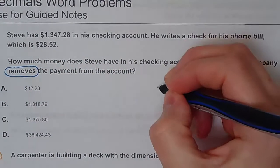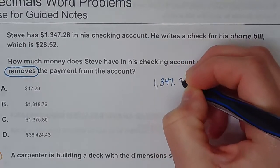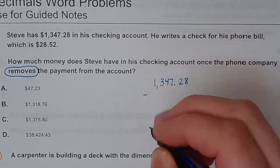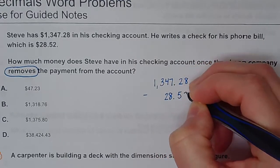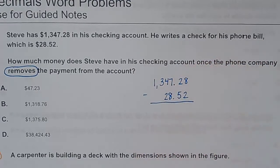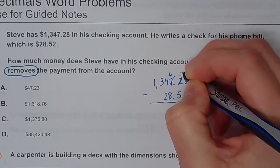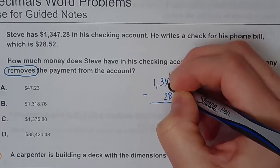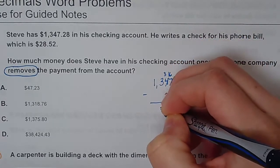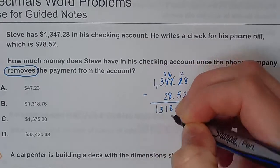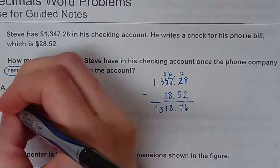This would definitely be one that is calculator inactive, so let's make sure we know how to do it. When you're adding and subtracting decimals, the decimals do have to be lined up. Six, twelve, seven, sixteen, eight, one, three, one. Bring your decimal straight down, so $1,318.76, which is B.